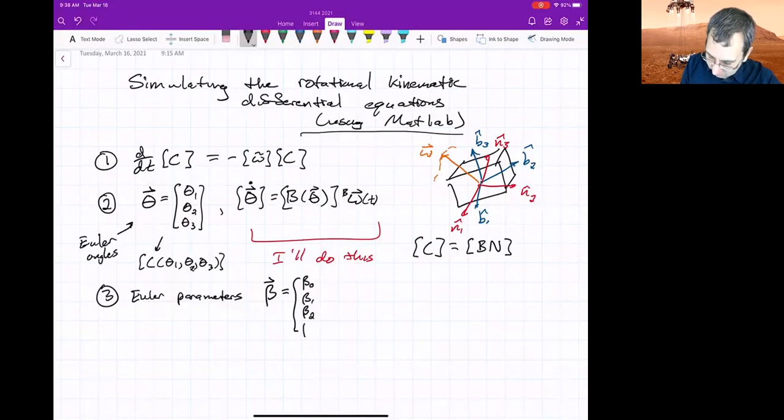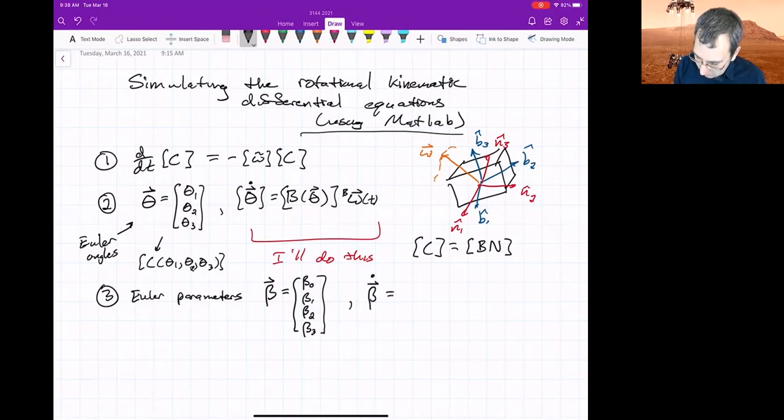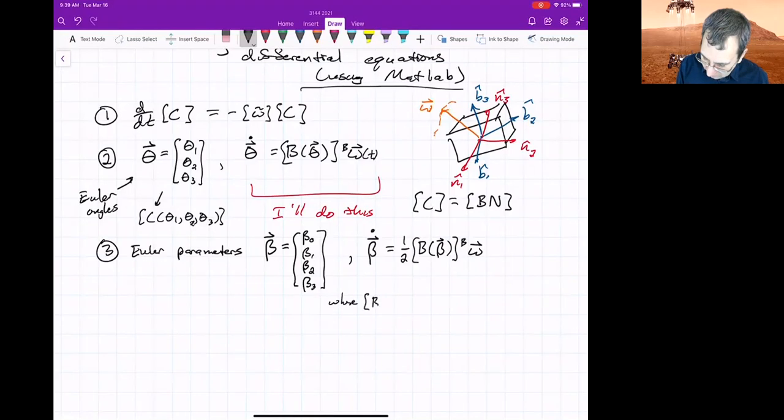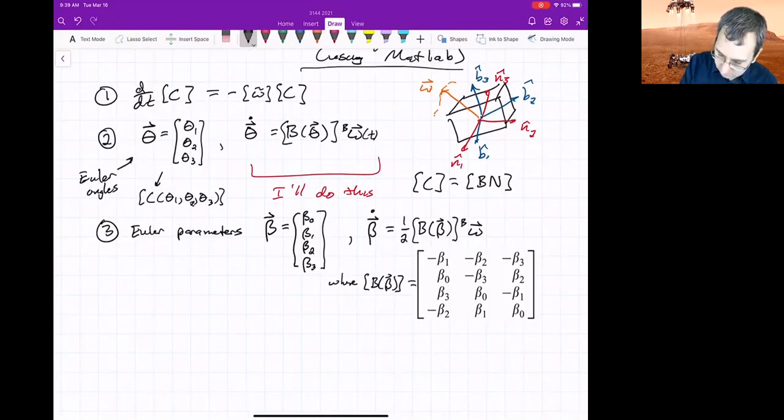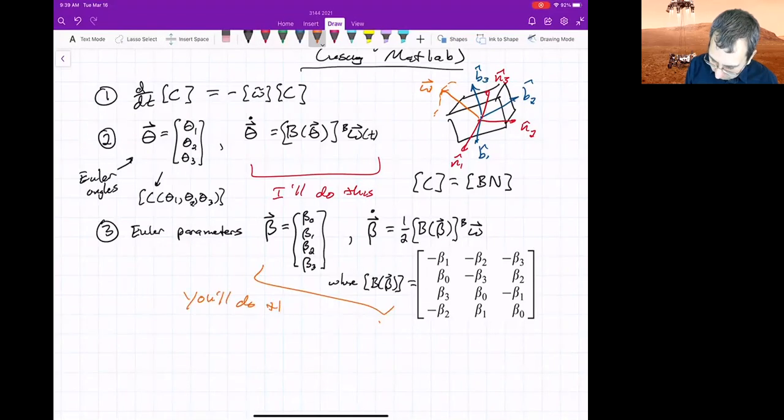We actually use these instead of the axis angle. There was an ODE that we mentioned. It was one half some beta matrix, which will be a function of the betas times omega written in the body fixed frame. Where B_beta looked like that. That's just from the book. So you will do this for the homework.